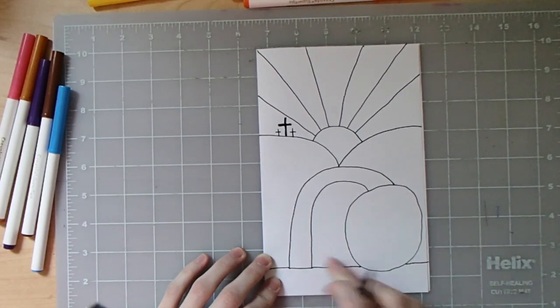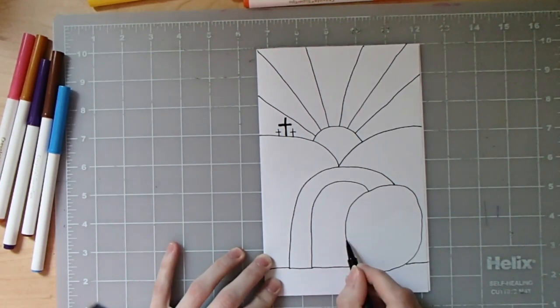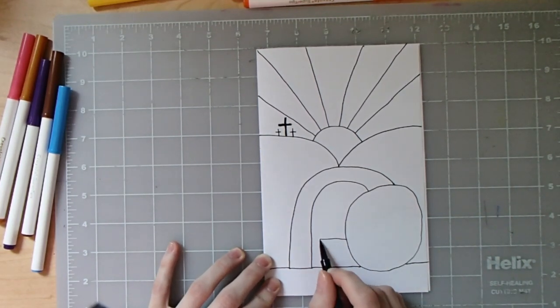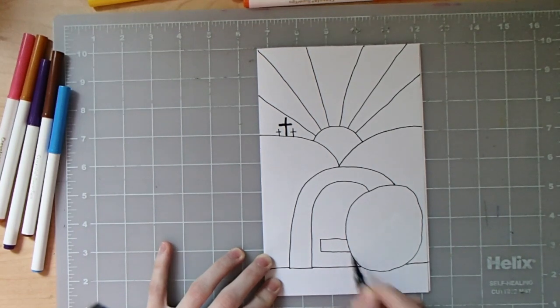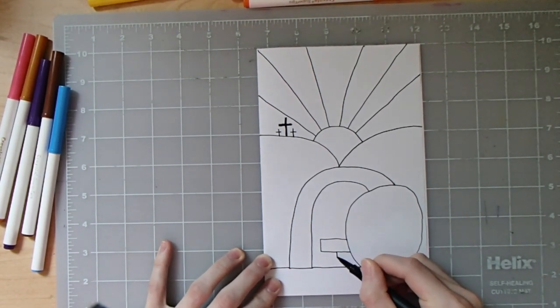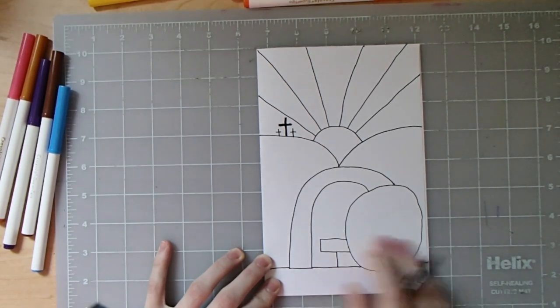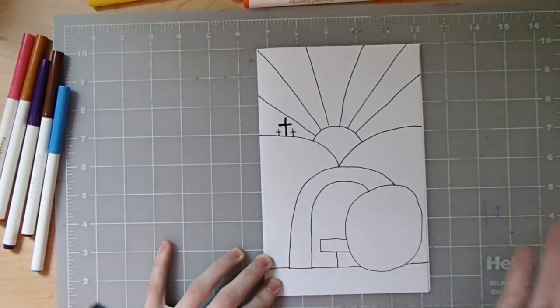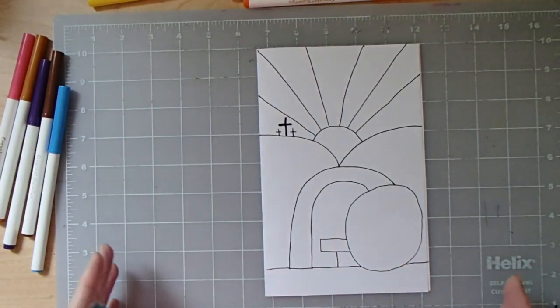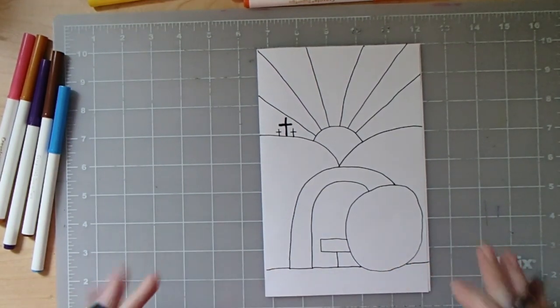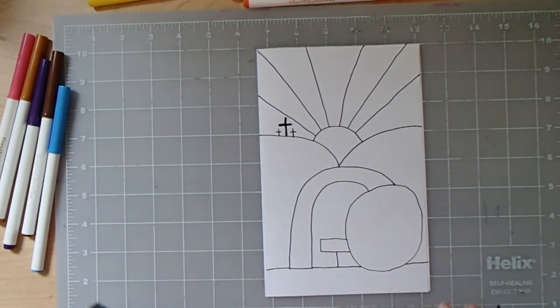The next step is to add the inner part of the tomb where they laid Jesus' body. So I'm going to draw a rectangle at the bottom of the tomb. And then underneath the rectangle, I'm going to draw a straight line connecting it to the bottom of the ground. Since Jesus rose from the dead, there's no need to draw anything in this tomb because it's empty.